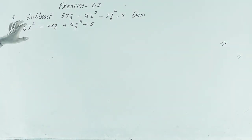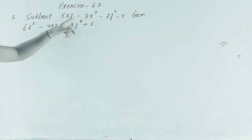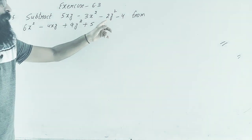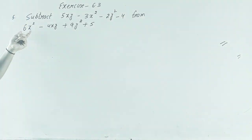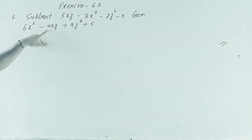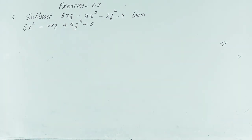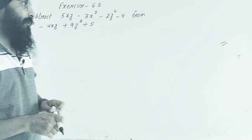Question number 5 is: subtract 5xy minus 3x square minus 2y square minus 4 from 6x square minus 4xy plus 9y square plus 5. Now we can do this question with horizontal method as well as vertical method.